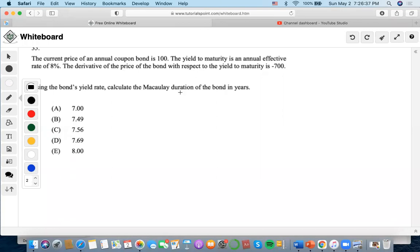Using the bond yield rate, calculate the Macaulay duration of the bond in years. The first thing we think of is how would we solve the Macaulay duration? We would always have to find the price of the bond.